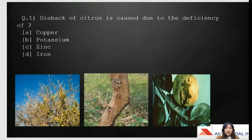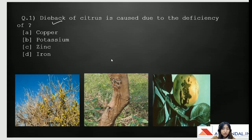The first question: dieback of citrus is caused due to the deficiency of — A) copper, B) potassium, C) zinc, or D) iron. Dieback of citrus is one of the main deficiency diseases in citrus, so let's roughly discuss some of the symptoms.